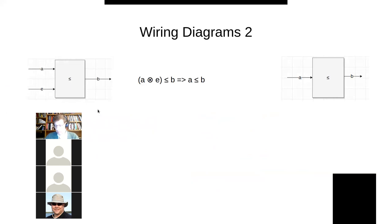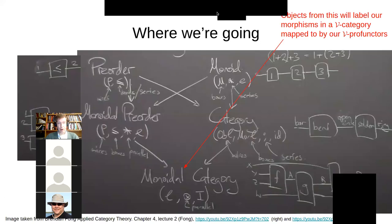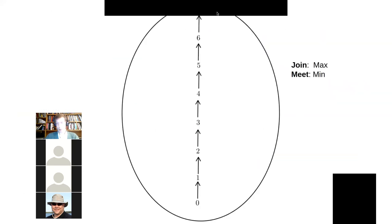So that's all for now. Hopefully that offers some recollection or understanding of the basics of profunctors and a bit of a reminder on pre-orders and monoids. We're going to press on with symmetric monoidal pre-order categories and wiring diagrams next time. Thank you very much, everyone.